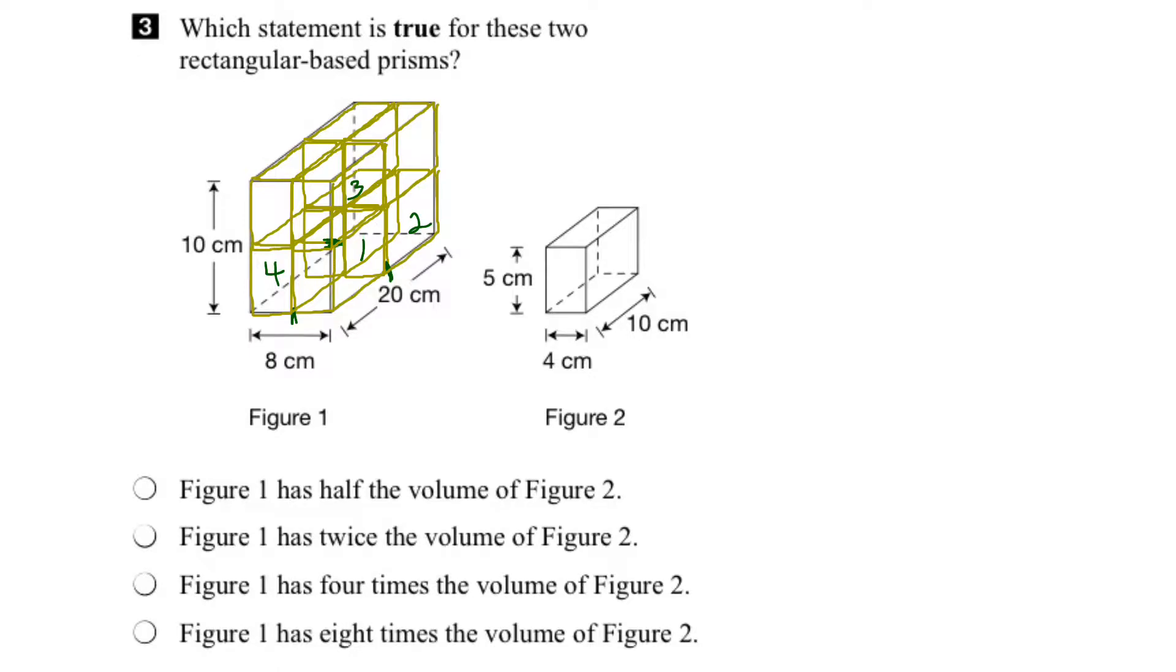So our larger container is now full and we put in it a fifth, a sixth, a seventh, and an eighth smaller rectangular-based prism. In other words, the volume of figure one, the larger rectangular-based prism is eight times bigger than the volume of figure number two. So visually it looks like our answer is the last one here. Figure one is eight times the volume of figure two. But let's confirm that using some algebra.